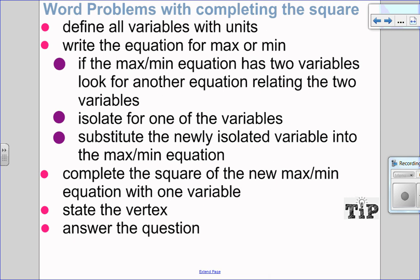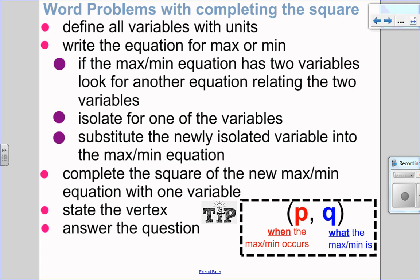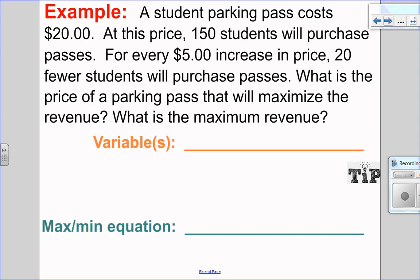Once you've done that, substitute your newly isolated variable into the max/min equation so you'll have just one variable. Once you have a max/min equation with just one variable, complete the square and state the vertex. The vertex is key to solving this question: the vertex coordinates (P, Q) tell you what the max or min is — that's your y-coordinate — and when the max/min occurs. Once you know that, you can answer your question again with units. I have two questions that we're going to try.